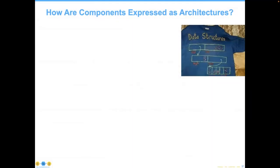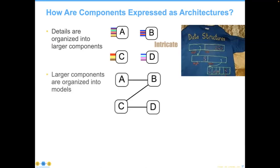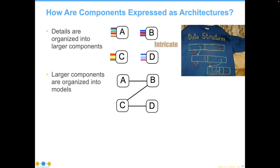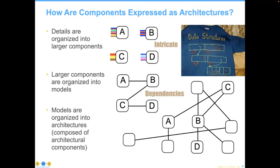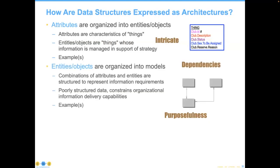Within that same context of selling the bridge conceptually, you might ask: how are components expressed as architectures? Details are organized into larger chunks, and those larger components are organized into models. The models become our data models, but they also introduce physical dependencies — you have to have a record of a customer before you can do any charges to the customer record. Those models are then introduced into architectures, which focus strategically on purposefulness. We take collections of entities and organize them into purposefulness.